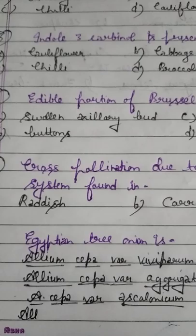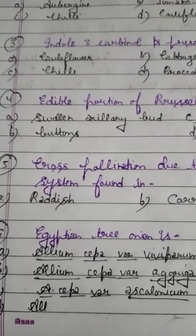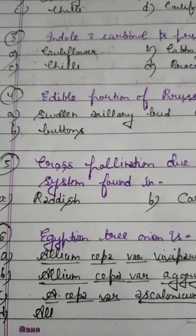Question number 5. Cross pollination due to sporophytic self-incompatibility system is found in: Option A: Radish. Option B: Carrot. Option C: Onion. Please remember — onion is cross pollinated due to protandry (protandery is found in onion). The correct answer is radish — cross pollination due to the sporophytic system is found in radish.